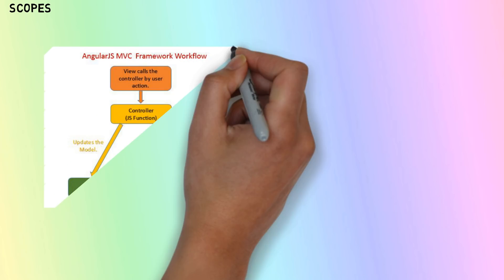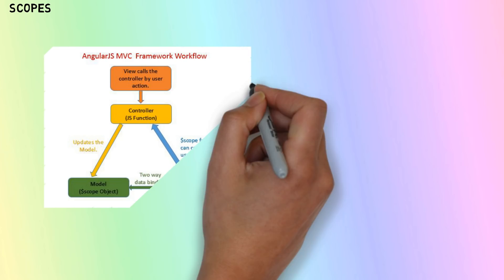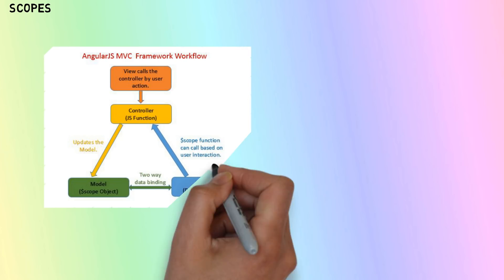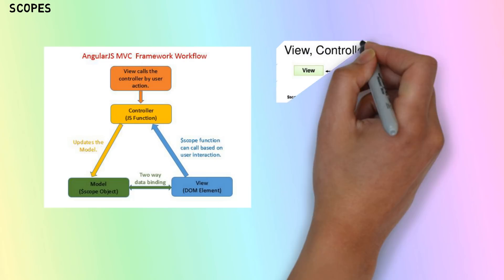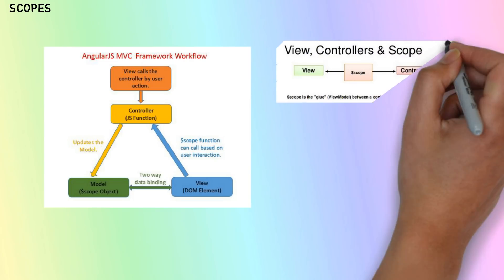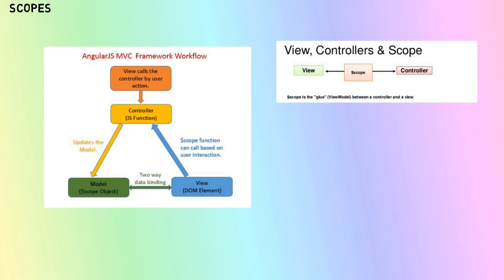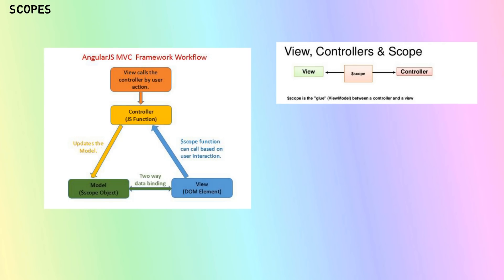The second feature we will discuss is scopes. AngularJS consists of three major parts: the view, which is the HTML; the model, which is the data available for the current view; and the controller, which holds the JavaScript functions and controls all the data. The scope that we are discussing is actually the model.